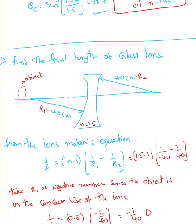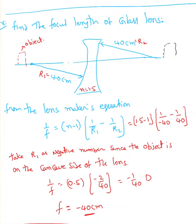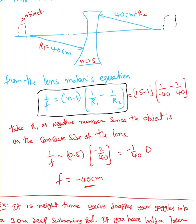Take R1 as a negative number if the object is on the concave side of the lens, and positive if on the convex side. It doesn't matter which side you place the object — whatever side the object is on, if that surface is concave, take R1 as negative. Applying the lens maker's equation with 1.5 − 1 and R1 = −40 and R2 = −40 centimeters, I get f = −40 centimeters.